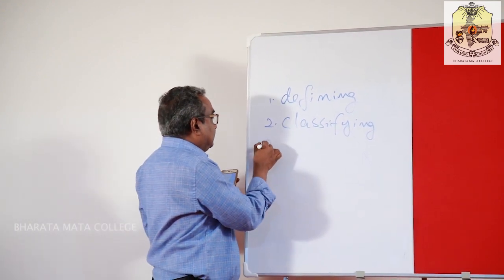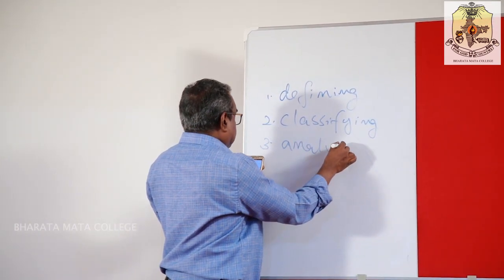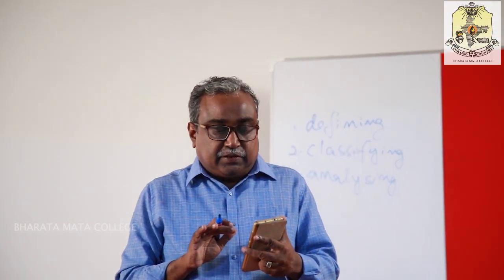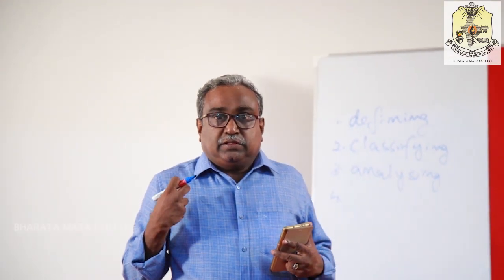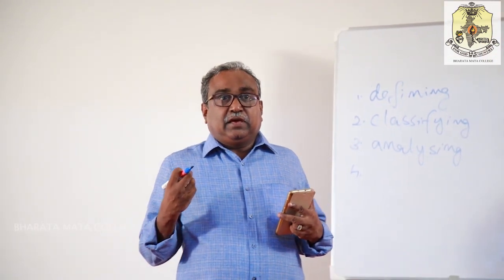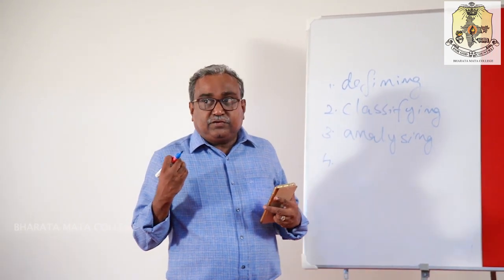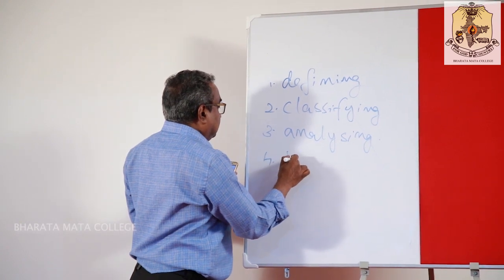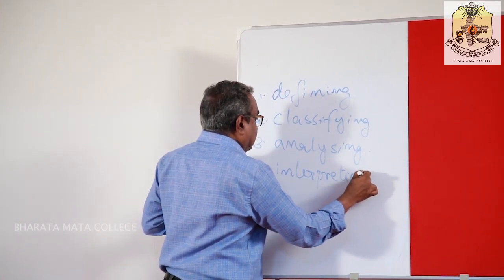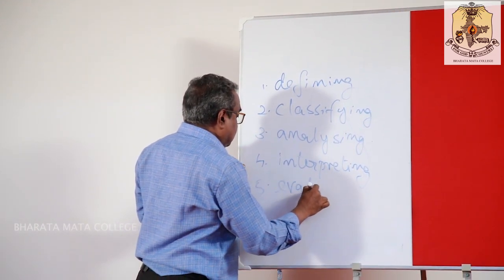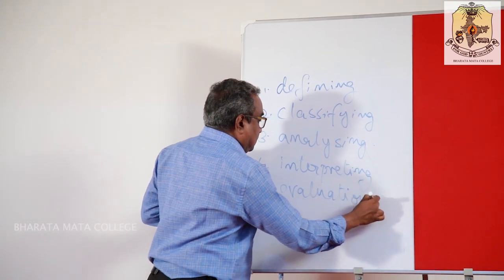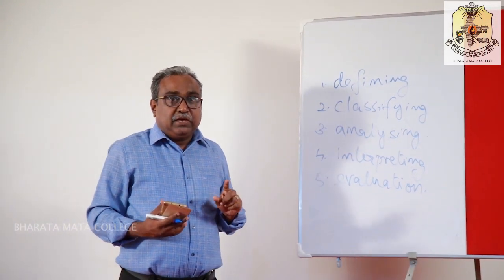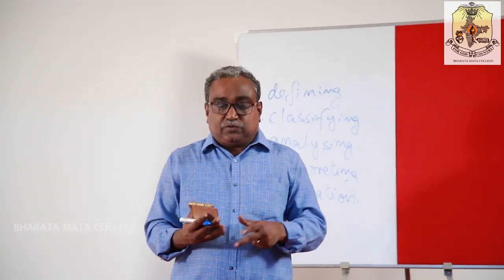The third one is analysing a literary work. The fourth point is the most important thing in literary criticism — that is interpreting a literary work. Interpreting means the interpretation can be of the reader, and also it is based upon the writer and upon the universe. Lastly, it is evaluating. So we have seen defining, classifying, analysing, interpreting and evaluating a literary work. These are the five stages of literary criticism.